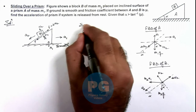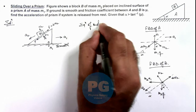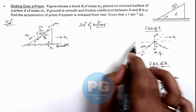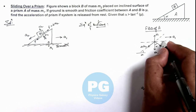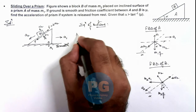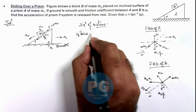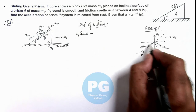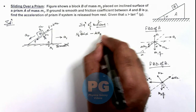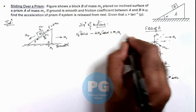Now we write the equations of motion. For block A, as it is moving to the right, the net horizontal force gives: N2·sin(α) − μN2·cos(α) = m1·a1. This is Equation 1.